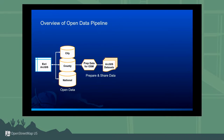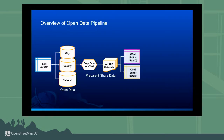What that means is we're converting the data from its native data model in whatever schema the contributor has created it in, and transforming it into an OSM-friendly format, converting fields and values into keys and values in OSM speak, and then publishing that as feature services in ArcGIS Online. Those ArcGIS datasets published as feature services can then be consumed.